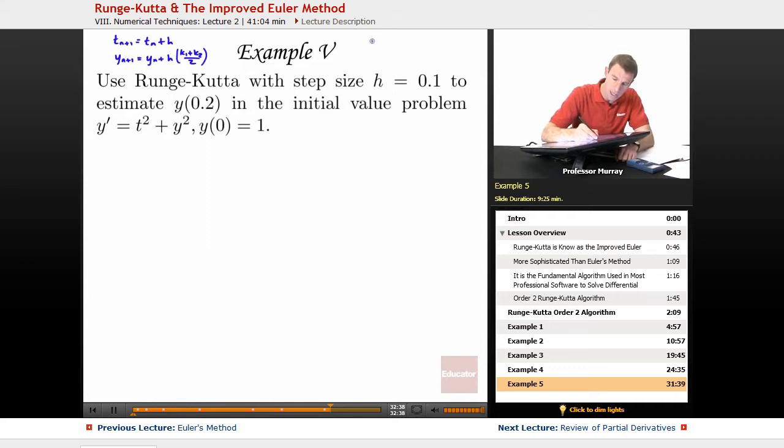And my k1 is equal to f of (t_n, y_n), my k2 is equal to f of, this is where it gets complicated, t_n plus h, and y_n plus h times k1.